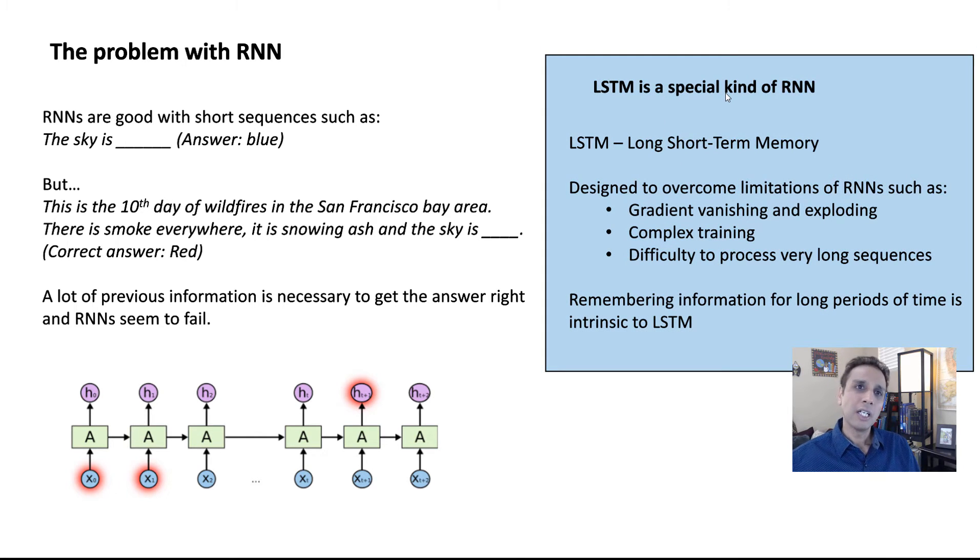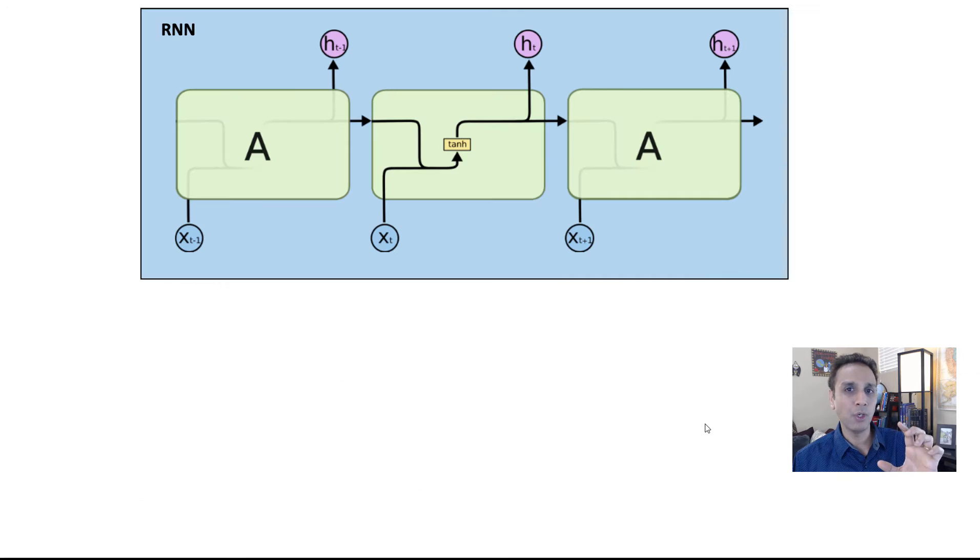This is why LSTMs. In fact, LSTMs - I should have included historical information. The concept of LSTM was from 1990s, so it stands for long short-term memory and, of course, it's designed to overcome the limitations of RNN, which is gradient vanishing and exploding, meaning the gradients in the gradient descent, they go to either zero or they explode all the way to infinity. That's a problem, and LSTMs are designed to overcome this. Also, RNNs can be very complex to train and, more importantly, difficulty to process very long sequences. And remembering this type of long information is intrinsic to LSTM.